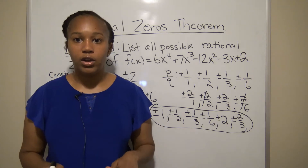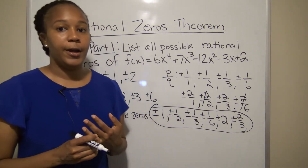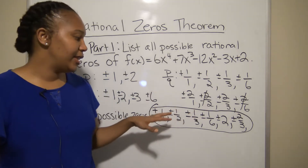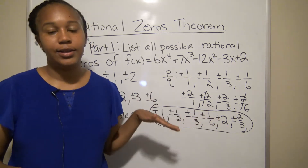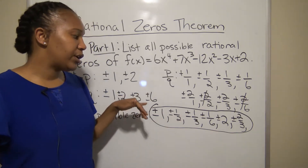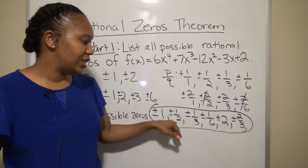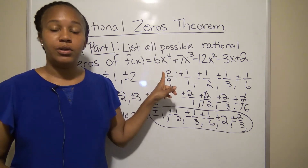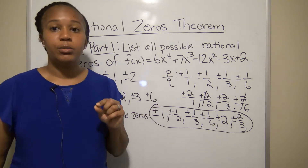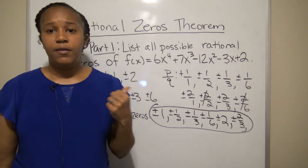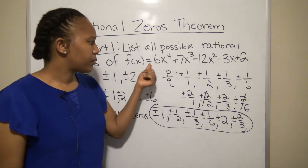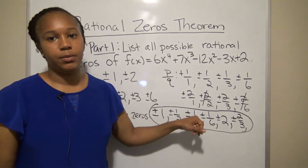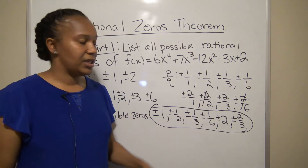Now for part two: we want to take these possible zeros and figure out which ones are actually zeros. We can do that by plugging each into the function and seeing if we get zero — since f(k) = 0 means k is a zero — or we can use synthetic division.